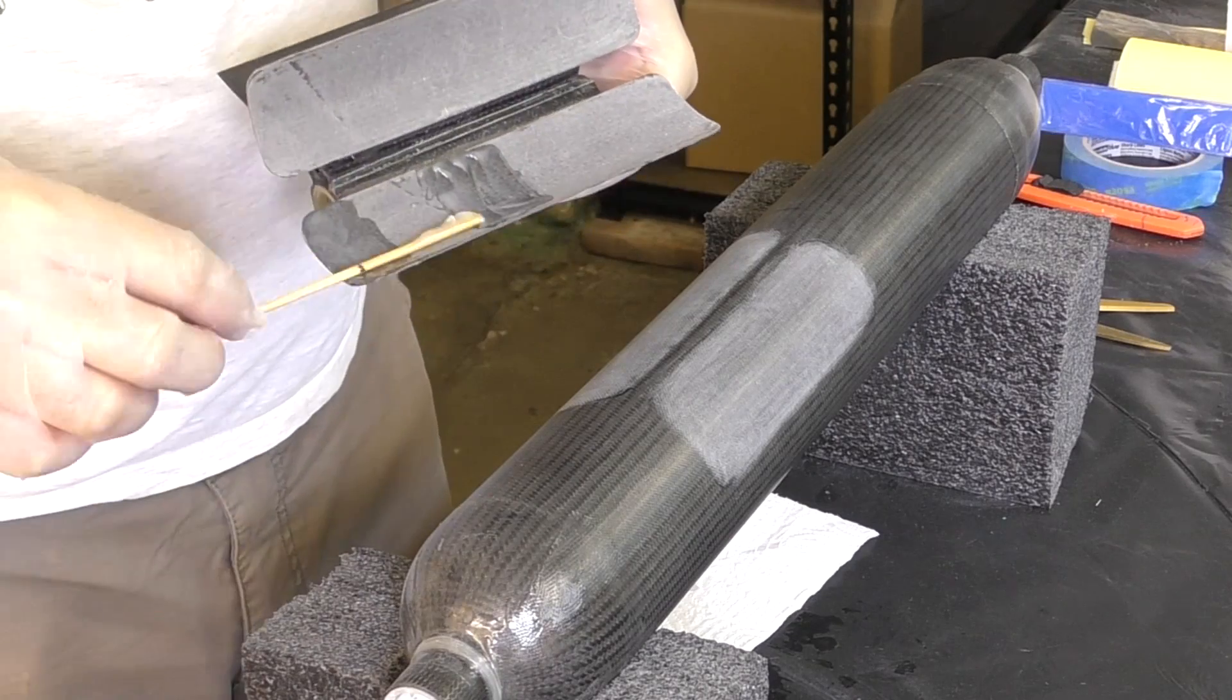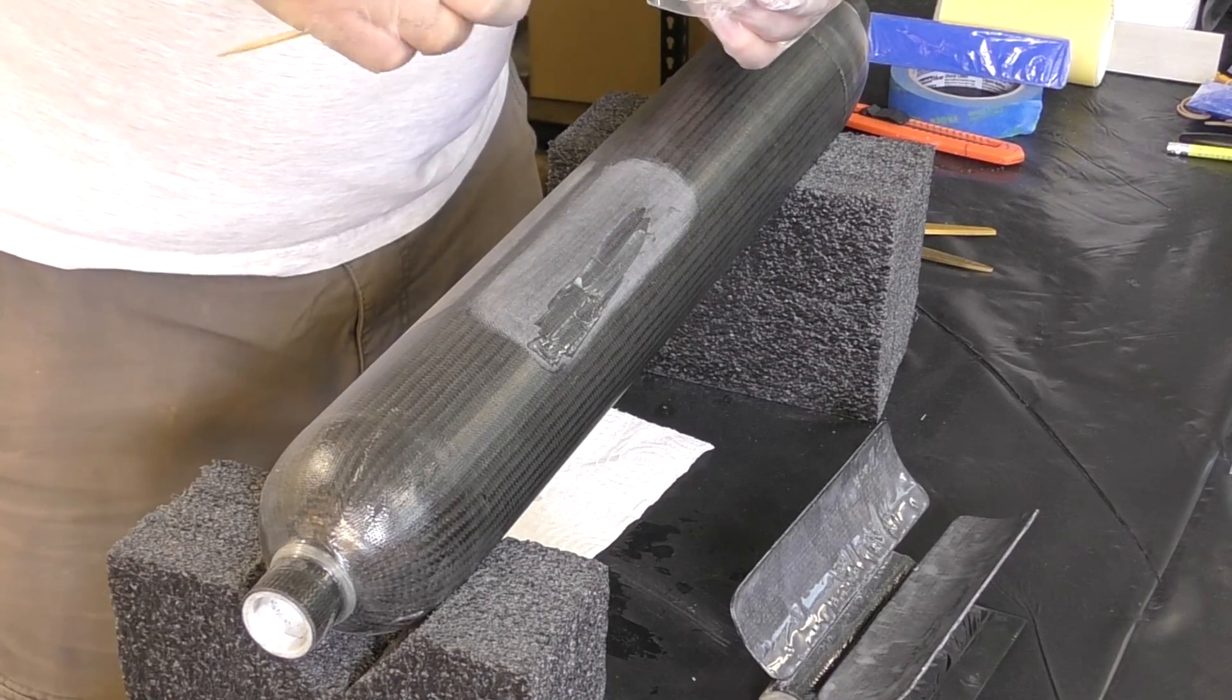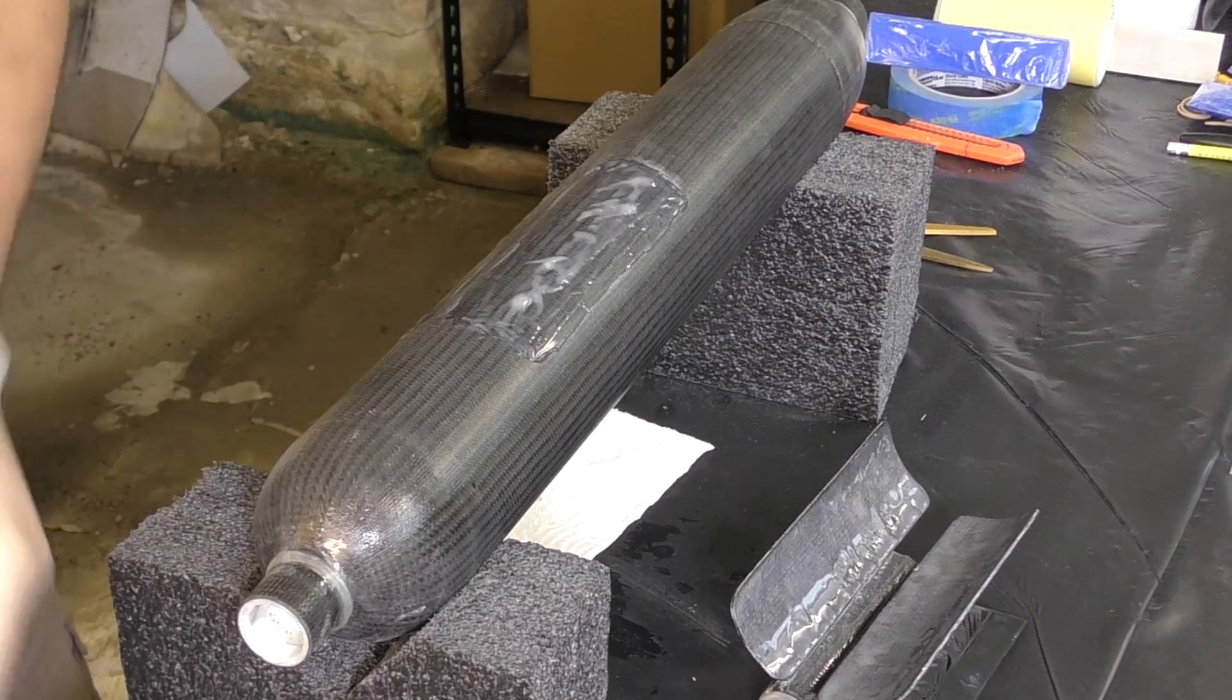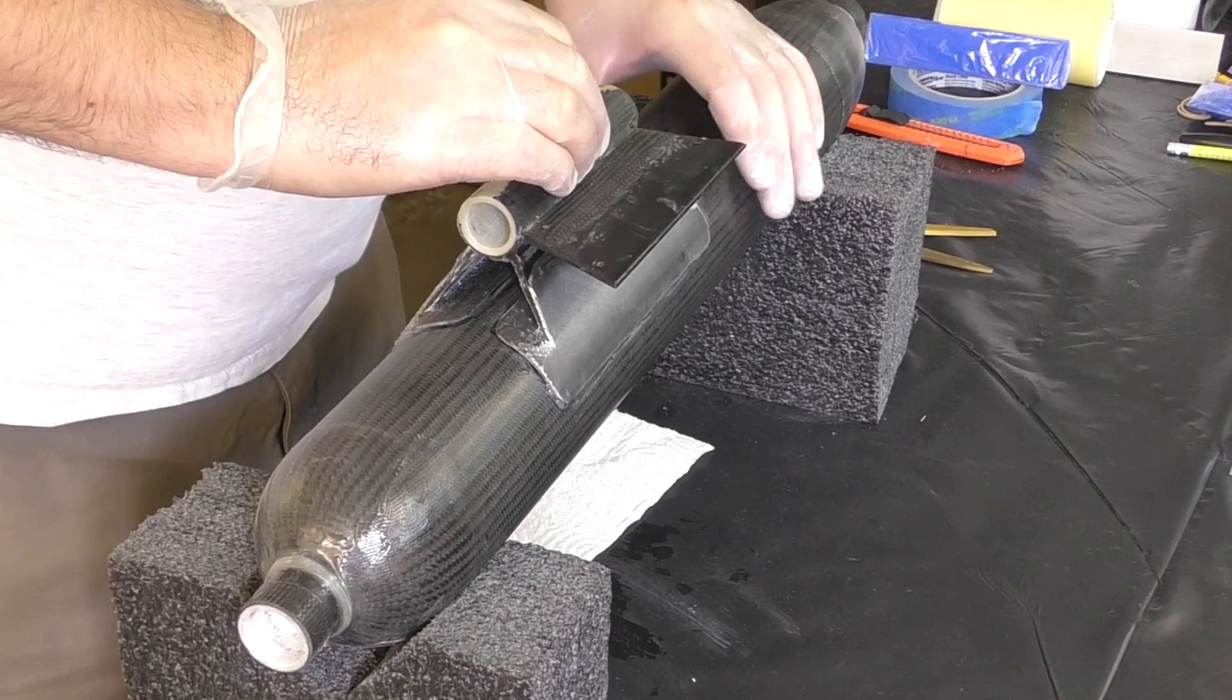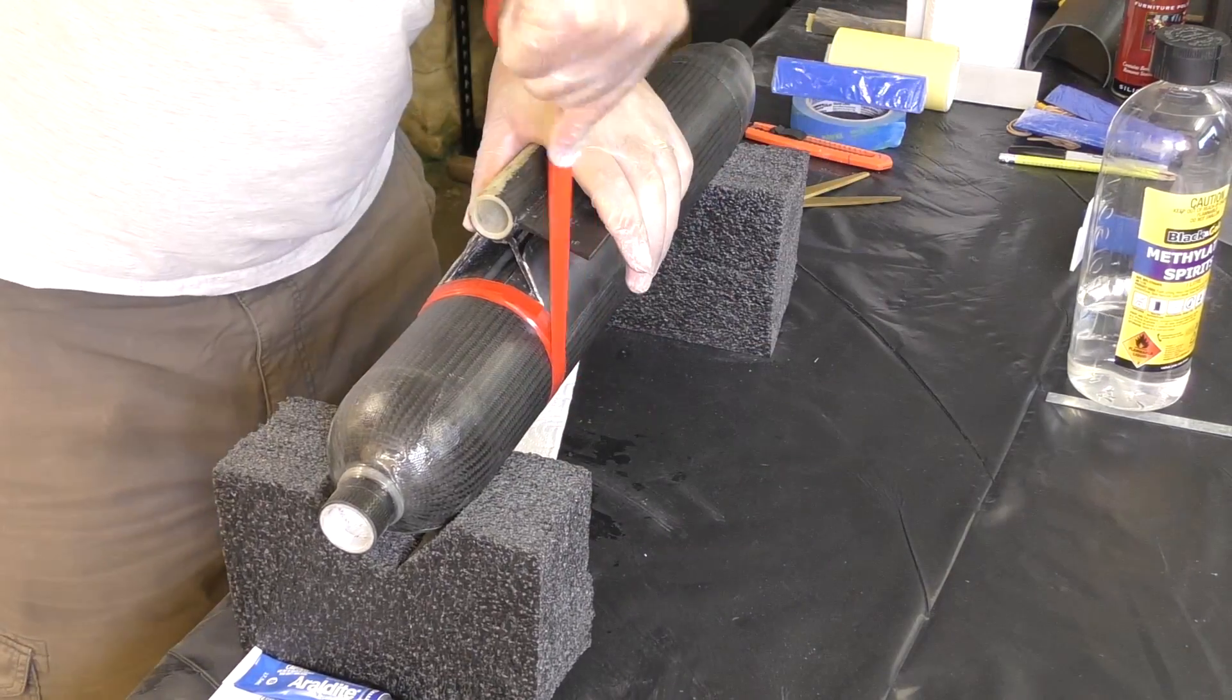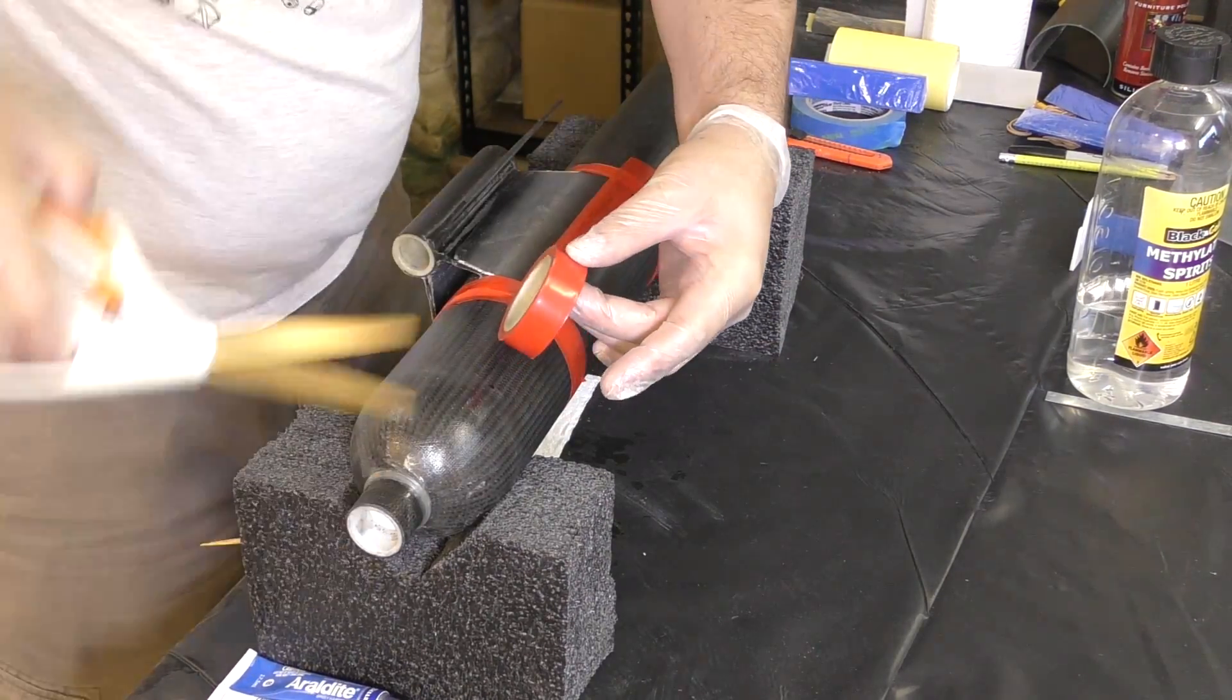To attach these mounts to the pressure chamber we're just using super strength Araldite epoxy. We don't intend to add any more fiberglass over the top of these joints. We let the whole thing cure overnight.